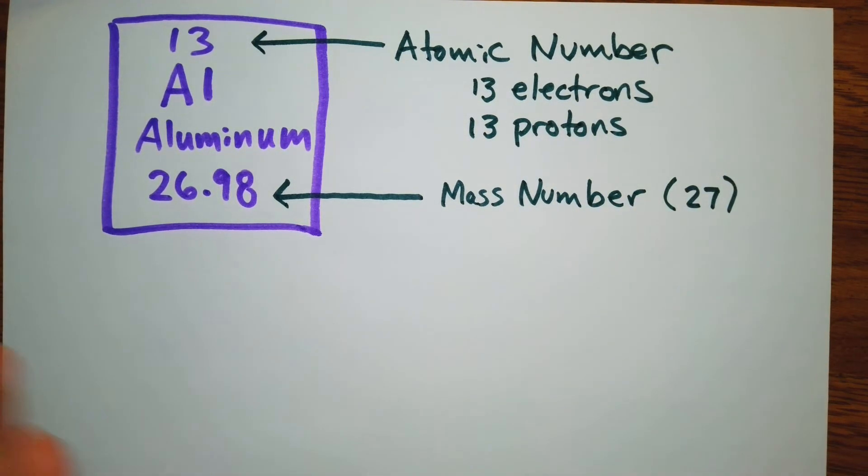And if you think about it, they should always be equal because electrons are negative, protons are positive, and you want to have a balance of charge. So hopefully that helps you remember that.